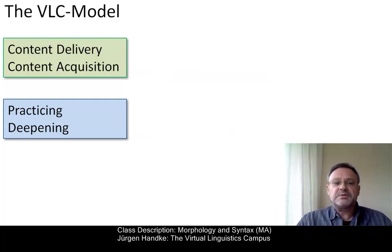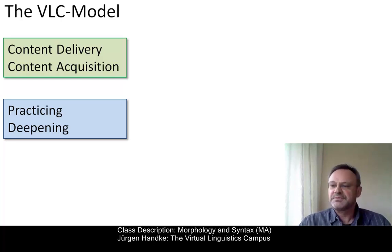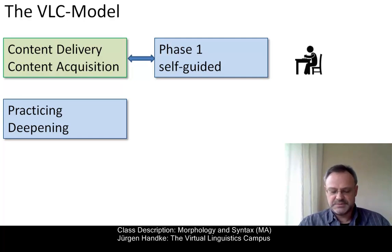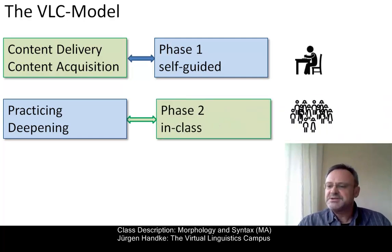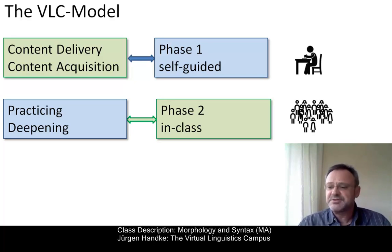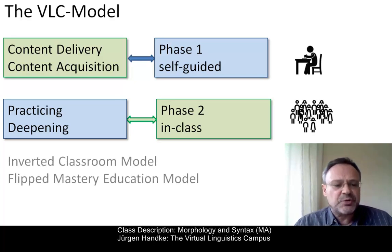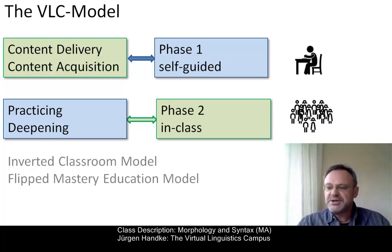We flip or invert these two activities and apply the inverted classroom model. Content acquisition is now self-guided — it takes place first and is done online. The additional in-class phase is now dedicated to practicing, rehearsing, discussion, analysis, etc. This means that prior to each in-class meeting, students must have worked through the online content of each respective unit. This model has become known as the inverted classroom model or the flipped mastery education model.